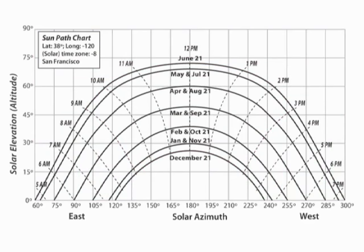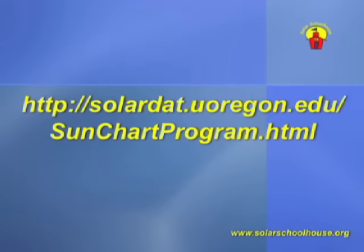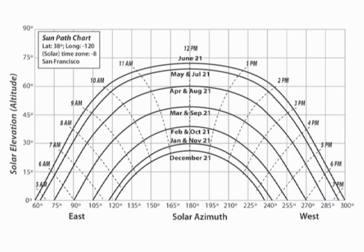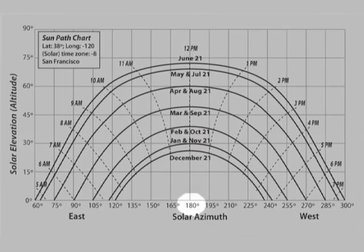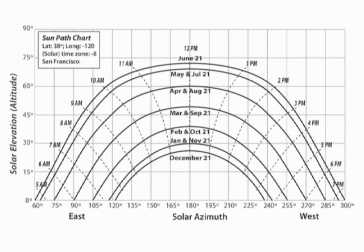The University of Oregon has an online program for creating sun path charts like these for your location. It's available for free at this web address. After making the charts online, you can print them out and check them at your location to see if any obstacles will shade your site. To do this, line up the south or 180-degree measurement on the bottom of the chart with true south at your location.